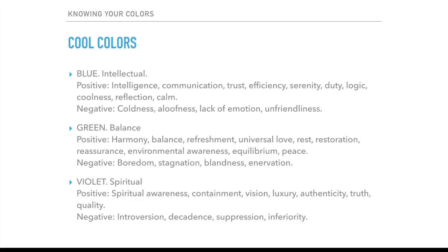For green, we have balance — the positive side includes harmony, refreshment, universal love, rest, restoration, reassurance, environmental awareness, equilibrium, and peace. Violet is somewhat spiritual — it conveys spiritual awareness, containment, vision, luxury, authenticity, truth, and quality.